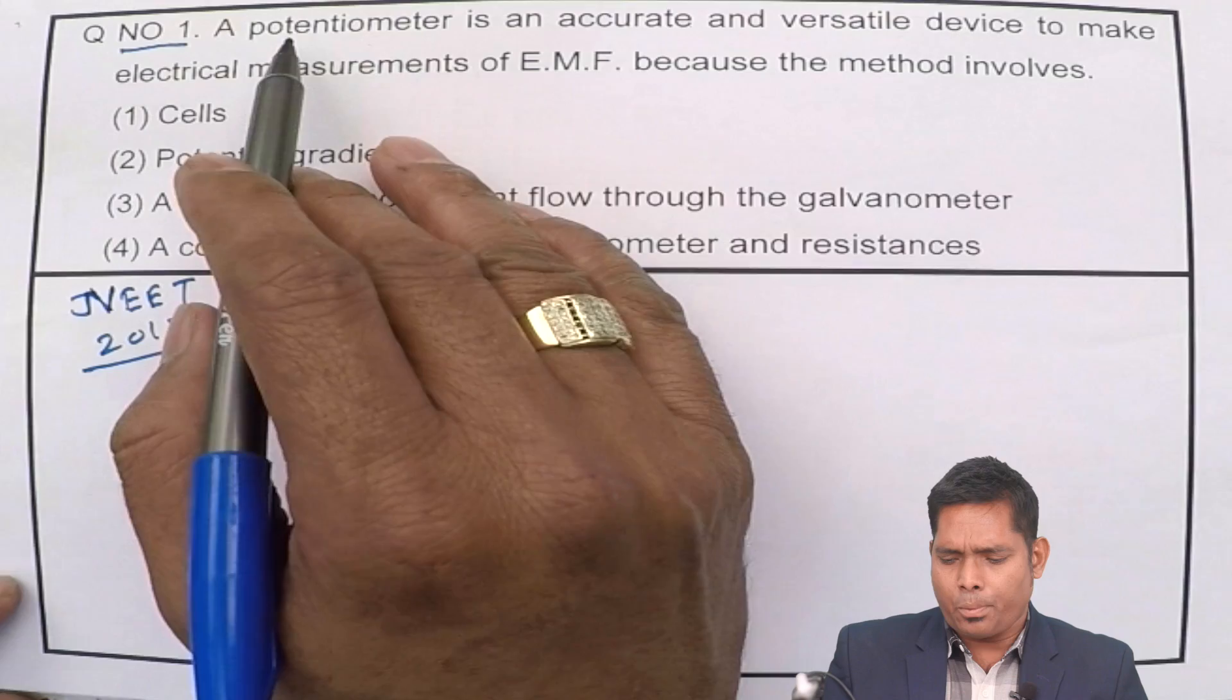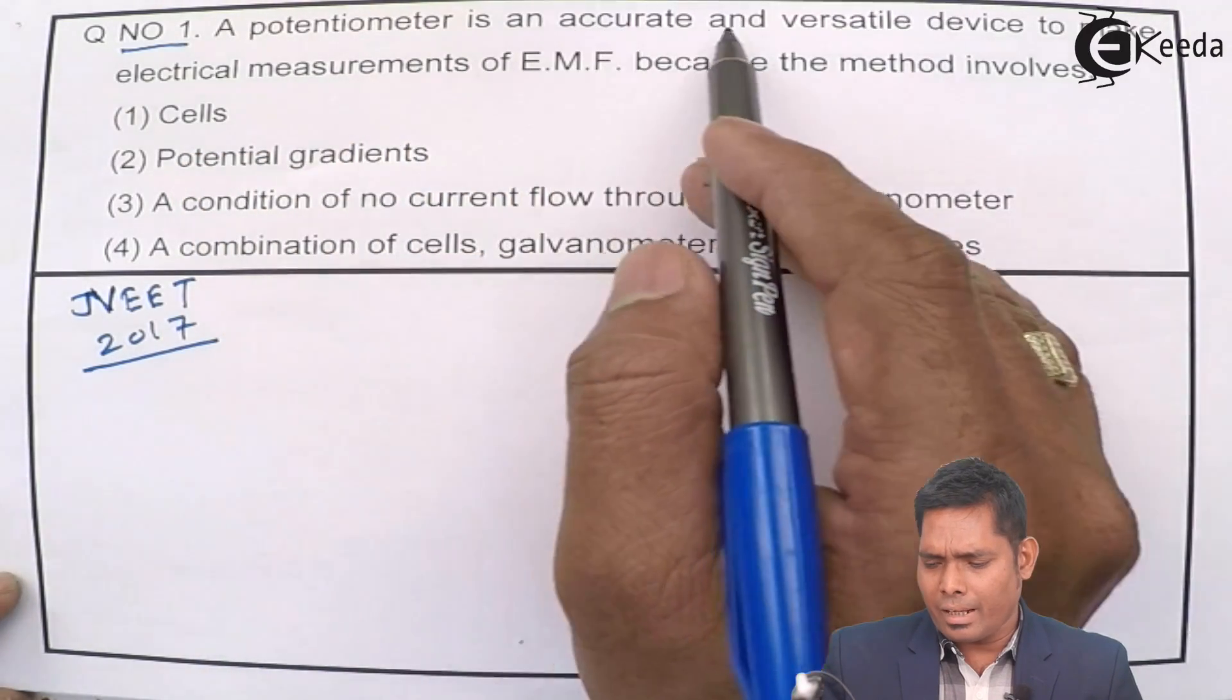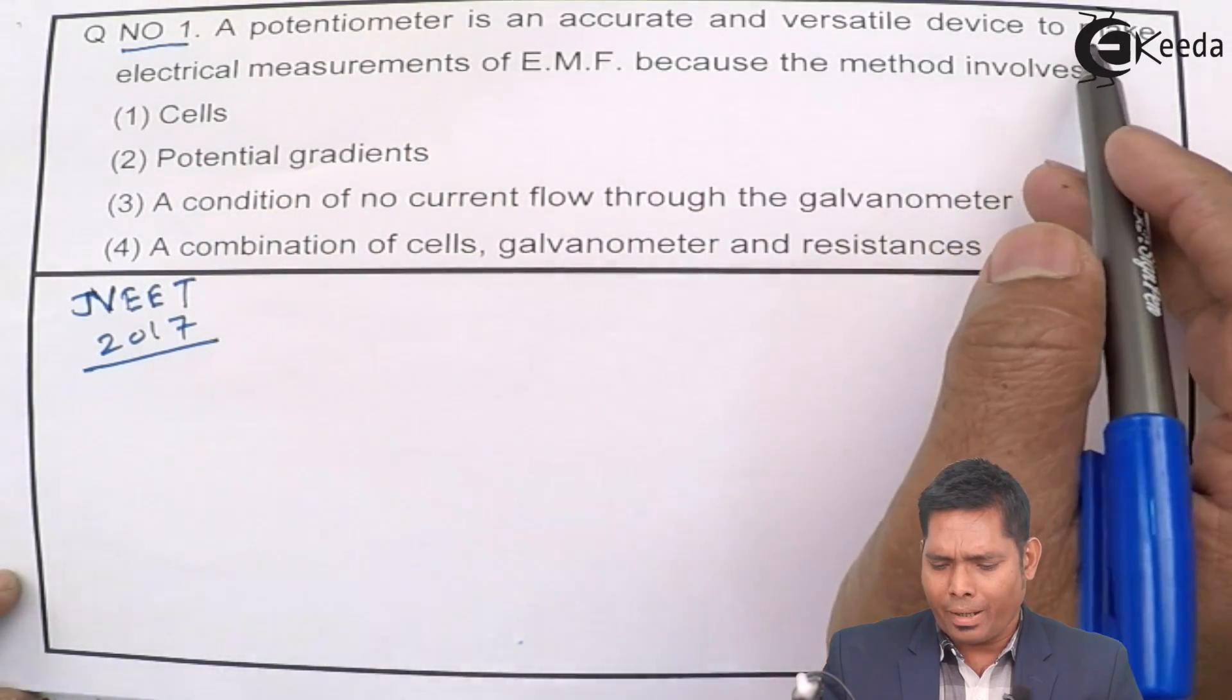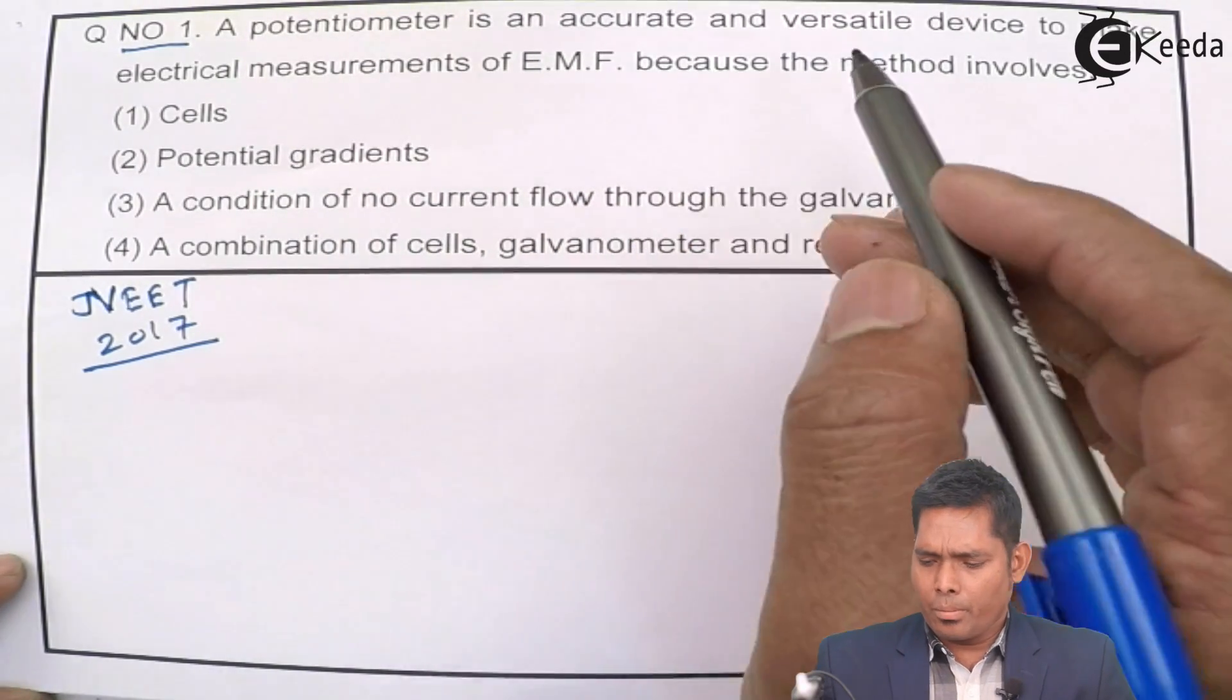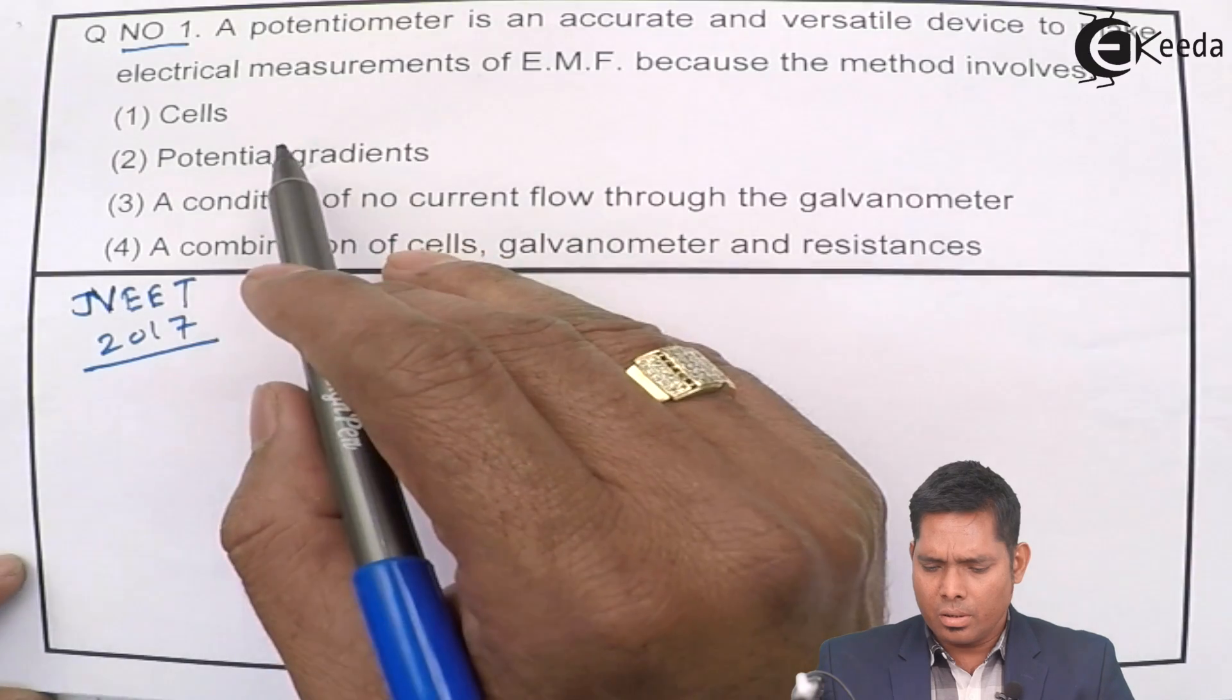Now, the question is the potentiometer is an accurate and versatile device to make electrical measurements of EMF because the method involves cells,